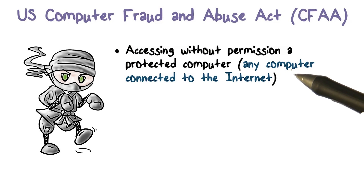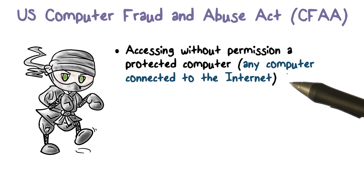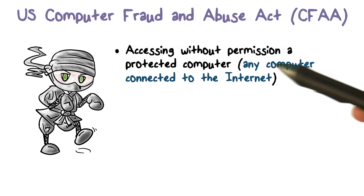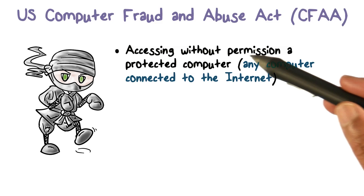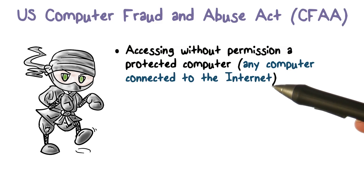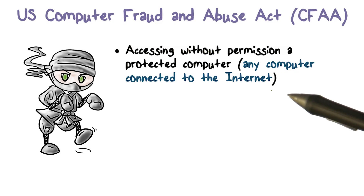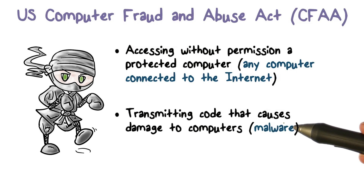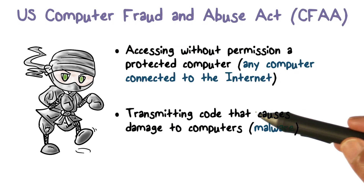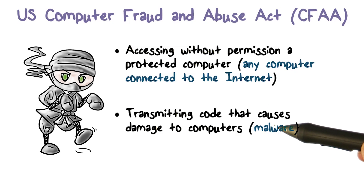The language used is "any protected computer." A protected computer is essentially any computer that's connected to the internet. If you access it without permission and gain access to the data, destroy it, or corrupt it, you're committing an illegal act. The law then gets more specific: transmitting code or malware — malicious software that can damage a computer — is illegal as well.